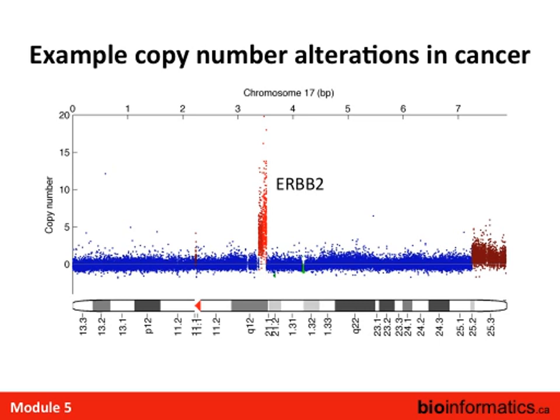Can SNPs make a person more susceptible to cancers? Definitely. We know about hereditary breast cancers — BRCA1 and BRCA2 — where inherited polymorphisms disrupt those genes and confer susceptibility. There's a large hereditary component to certain forms of cancer.